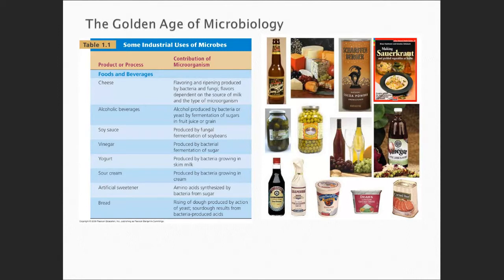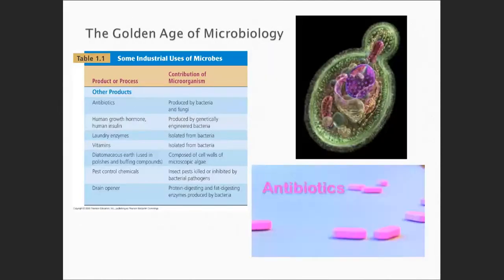Kefir, tempeh, and kimchi — you could go on and on about these delicious foods made through processes Louis Pasteur developed. The science continues to build. Here are other things made by microbes: antibiotics, human growth hormone including insulin, laundry enzymes, vitamins, diatomaceous earth, pest control chemicals — actually bacteria we can use to destroy caterpillars and other things — and drain opener. All these things came through those early scientific processes and we use them to make human life better.